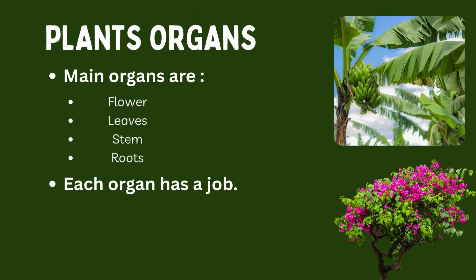Next are plant organs — or you can say the parts of plants. Just like our body has organs such as heart, lungs, and liver, the plant also has organs. The main parts of the plants are leaves, stems, roots, and flowers. Each part — or organ — has a special job to keep the plant alive.